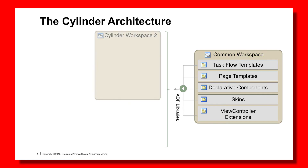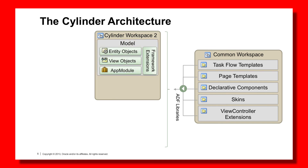The difference we get in this particular pattern is when we introduce the Cylinder. The key difference is that the Cylinder workspace has its own model project with Entity Objects, View Objects, Application Modules and framework extensions, plus the associated Bounded Task Flows, which may be one to many.